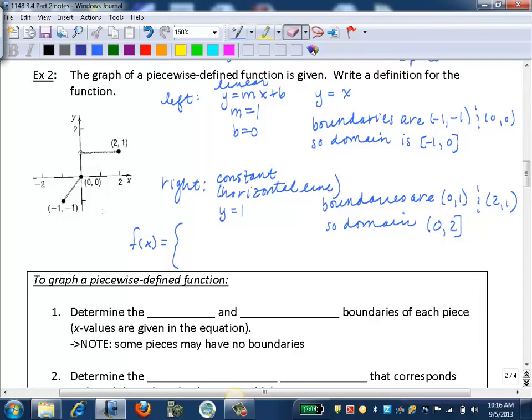The equation of our left piece was y equals x, or f of x equal to x. And now we need to say the boundaries of that piece. So that's from negative one to zero, and we use inequality notation here. So this would be if negative one less than or equal to x less than or equal to zero.